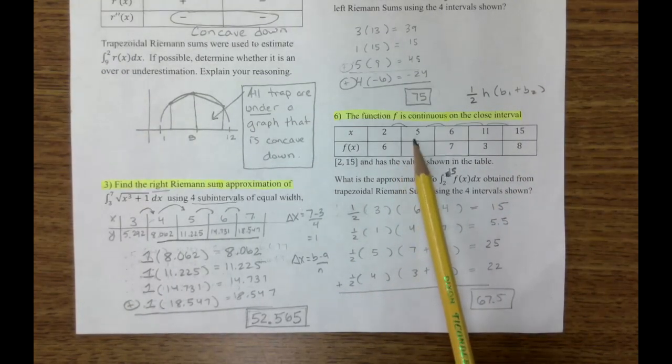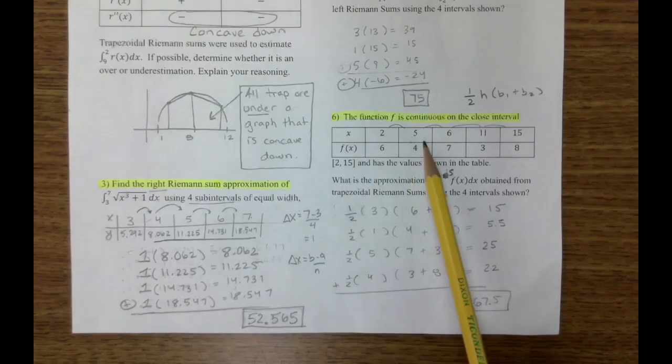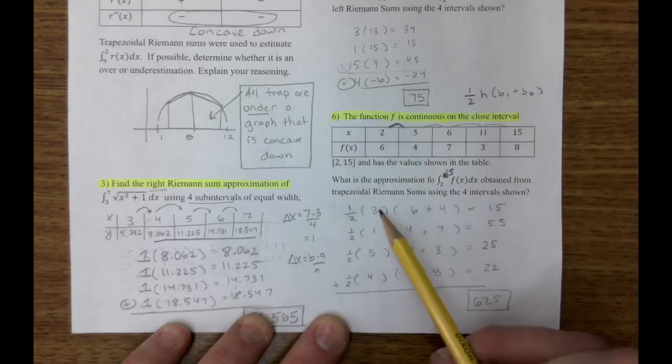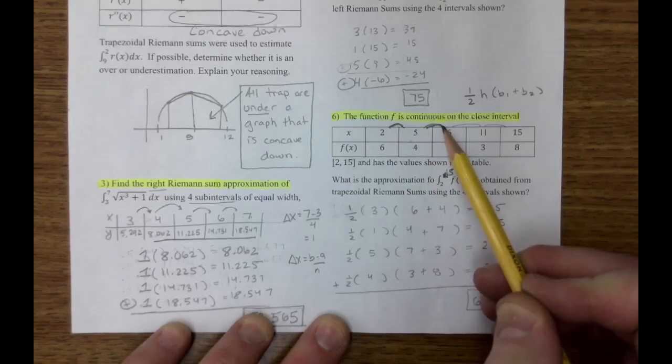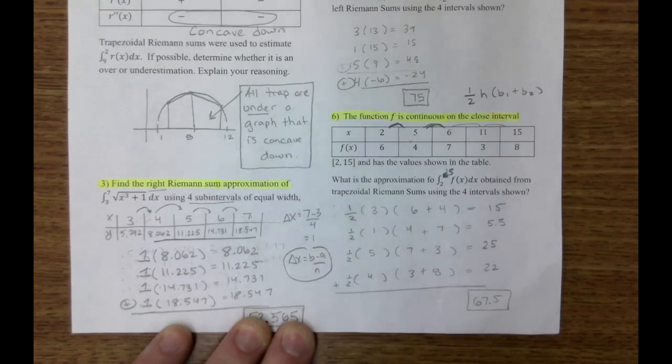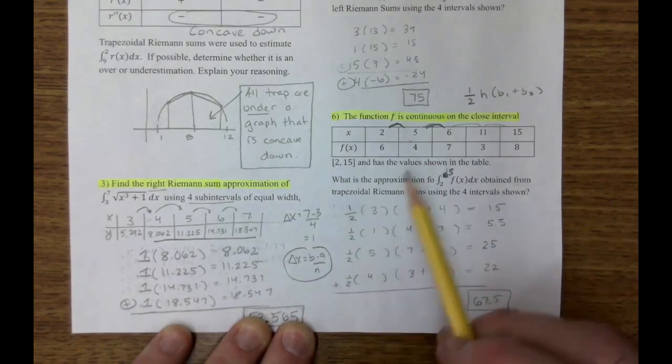And the formula for a trapezoid, if you don't know, is one-half height base one plus base two. So I have one-half times the height. Now in this problem, we already have a table created for us. So we just have to say, look, the width here is three. This width, again, delta x, b minus a divided by n.